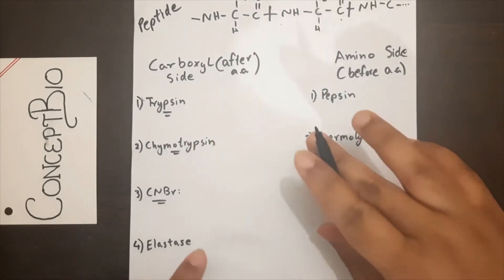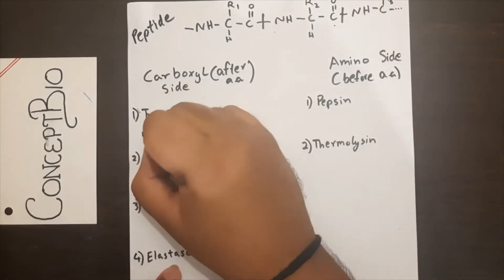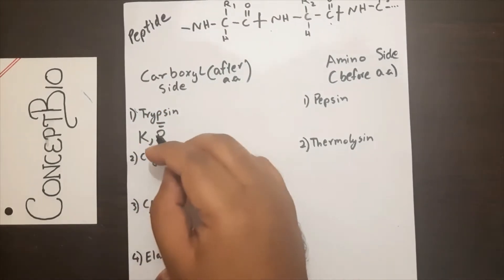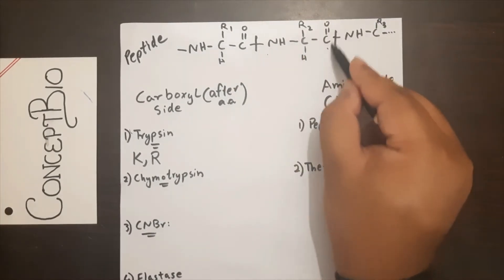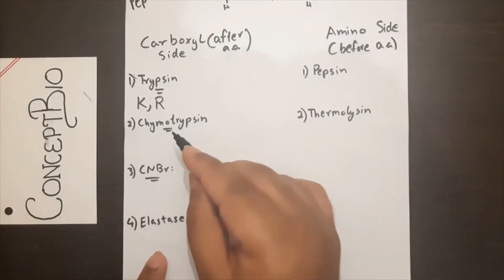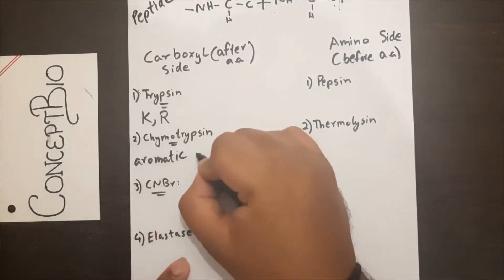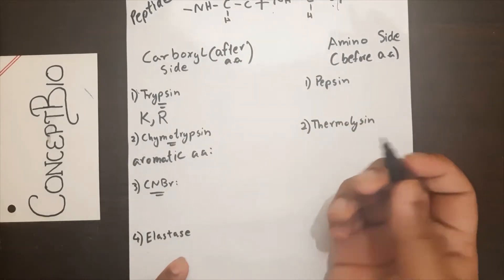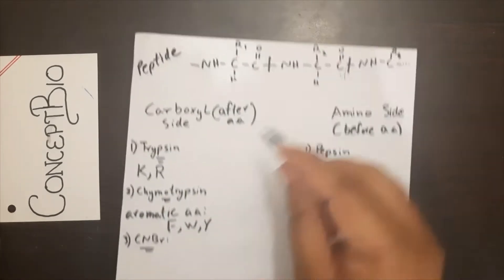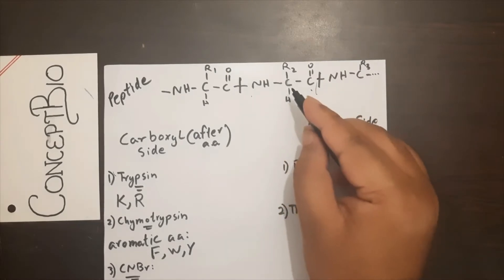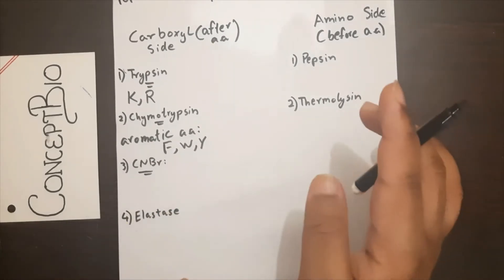Now, which proteolytic enzymes cleave on the carboxyl side? First, trypsin — trypsin will only cleave when R2 is lysine (K) or arginine (R), cleaving on the carboxyl side after it. Second, chymotrypsin — chymotrypsin will only cleave if the R2 group is an aromatic amino acid: phenylalanine, tryptophan, or tyrosine. It also cleaves on the carboxyl side, forming two different fragments.